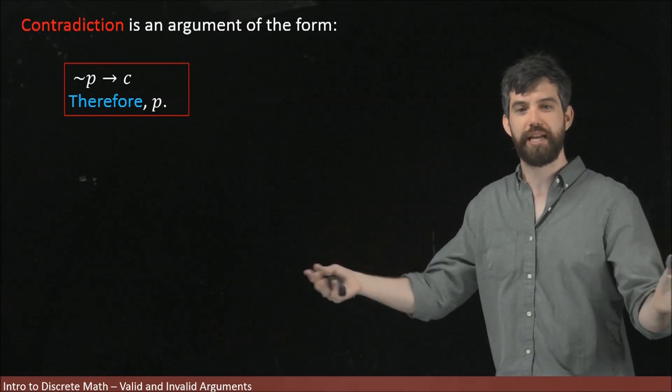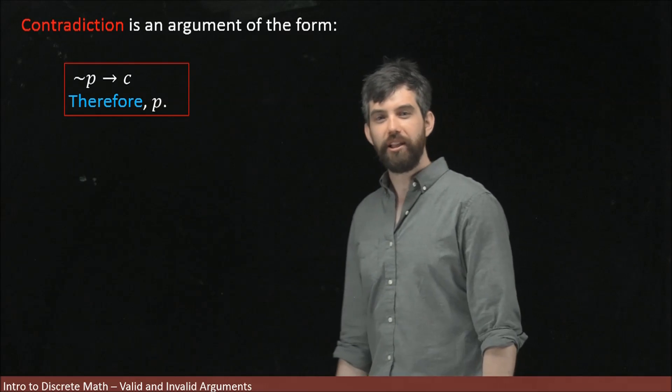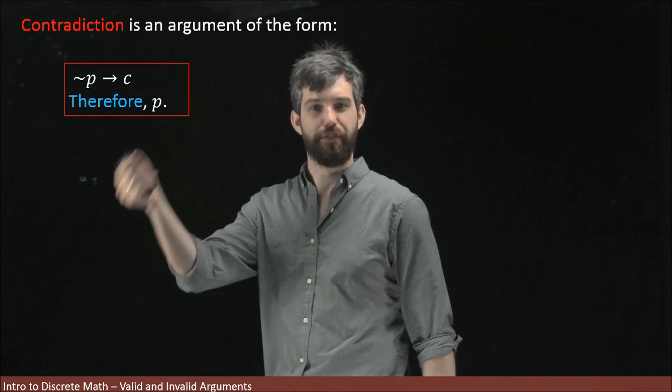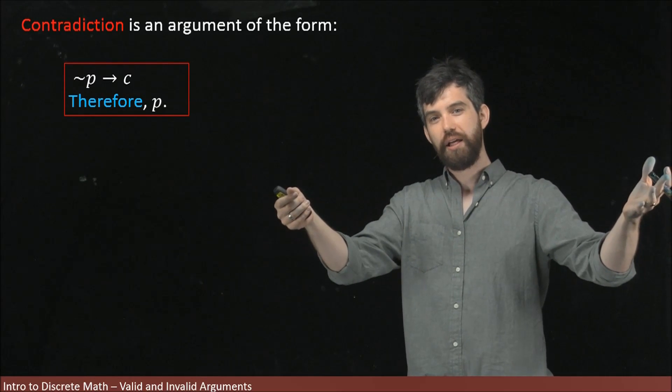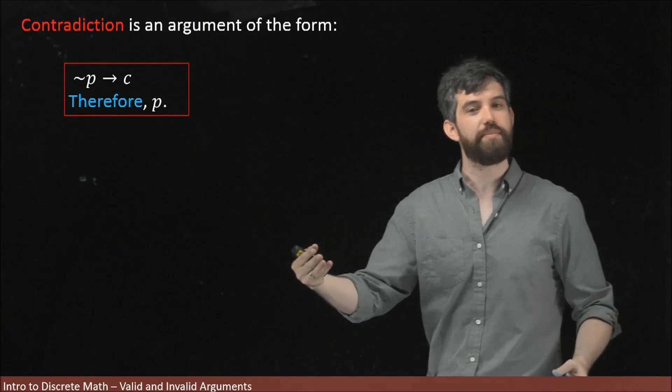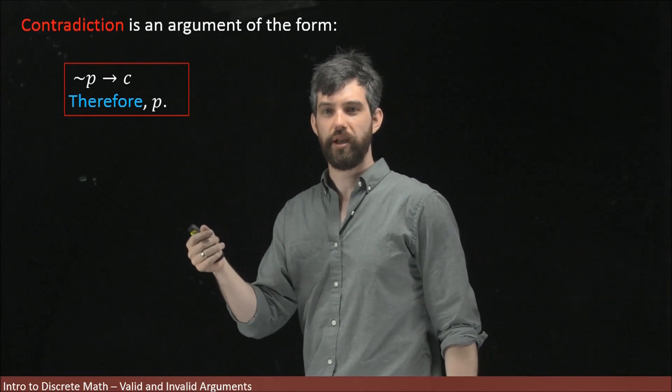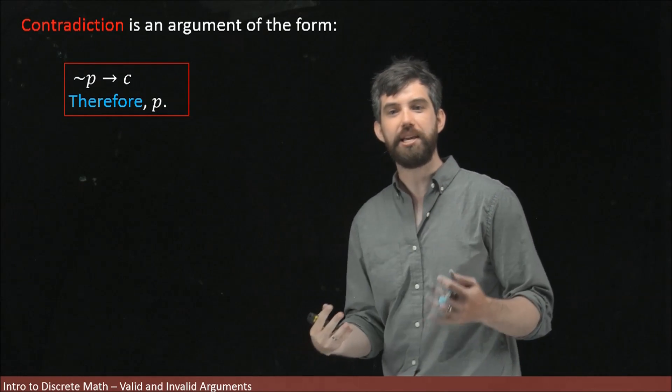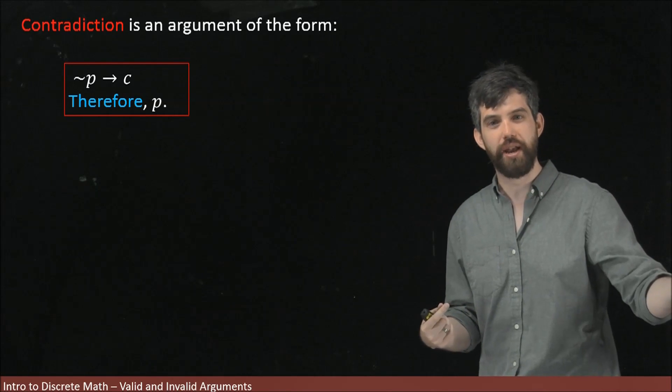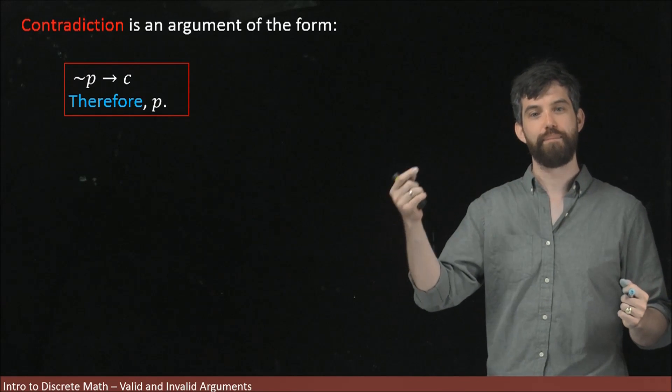Something like this that just makes no sense at all. So if assuming my statement was false leads me to this nonsensical contradiction, the contradiction that's always false, then my initial statement must indeed be true. So this is the logical form of a contradiction: not P implies a contradiction, therefore my initial claim must be true.